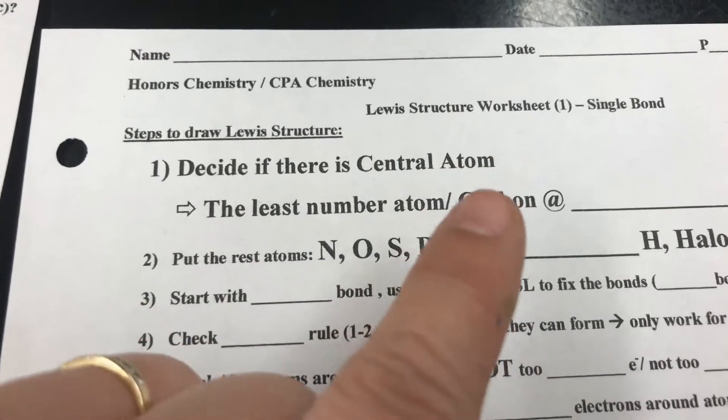After you put the bonds on and check the HONC rule, step five is to check if atoms are full shell — meaning they don't have too many or too few electrons. For example, beryllium (Be) is a special case — Be only needs four electrons to be full shell, so giving it eight would be too many. Carbon needs eight electrons to be full shell; if you only gave it four, that's too few. Make sure everybody must be full shell.